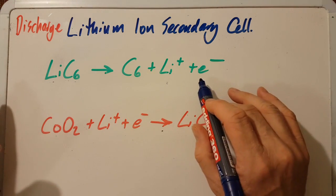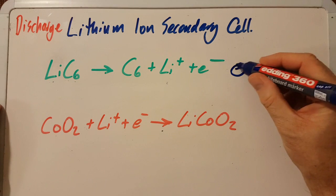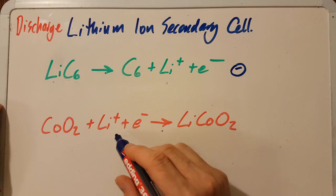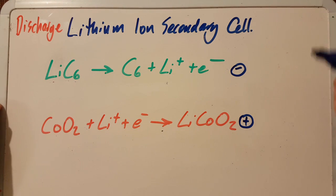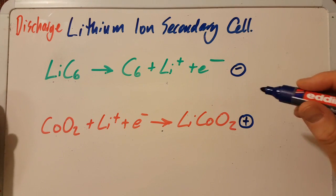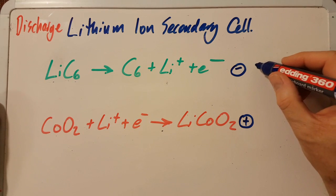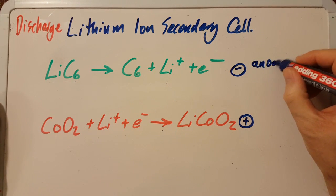This half equation's giving off electrons - that means it's a negative electrode. And this one is receiving electrons, that's the positive electrode. In voltaic cells, galvanic cells, electrochemical cells - all the same thing - the negative electrode is the anode.